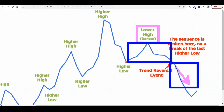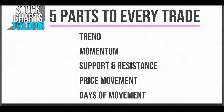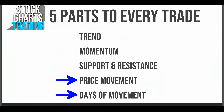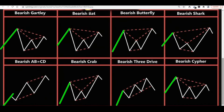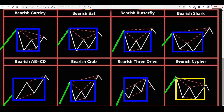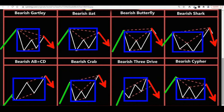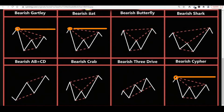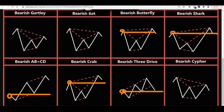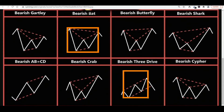If you get in at the highs, range box duplication gives you a much greater potential profit. This is where the five parts of every trade are important — we talk about trend, momentum, support, and resistance all the time, but price movement and days of movement are very important too. When looking at any harmonic pattern, there are a lot of different options: price bouncing back and forth before going lower, price staying under your strike price, or price coming back over your lower strike price. Calculating these moves is very important when picking which option and how long to be in it.